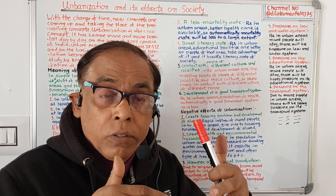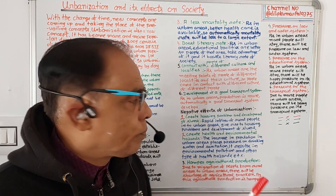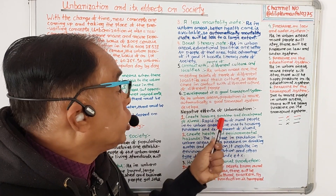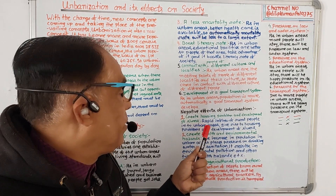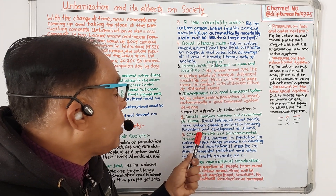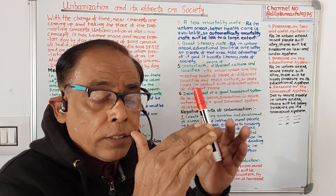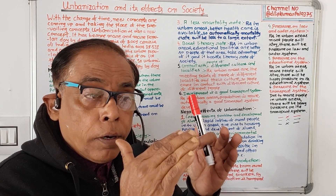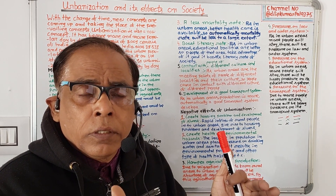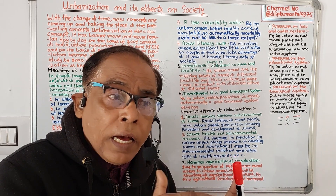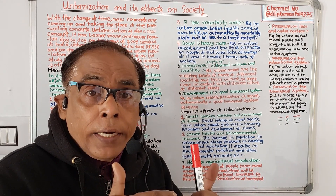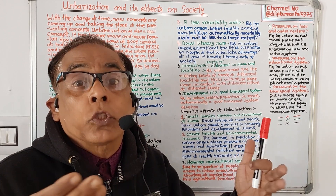Now we will discuss the negative effects of urbanization. Number one: it creates housing problems and development of slums. Rapid inflow of rural people into urban areas gives rise to housing problems and the development of slums, as more and more people from rural areas move to urban areas.